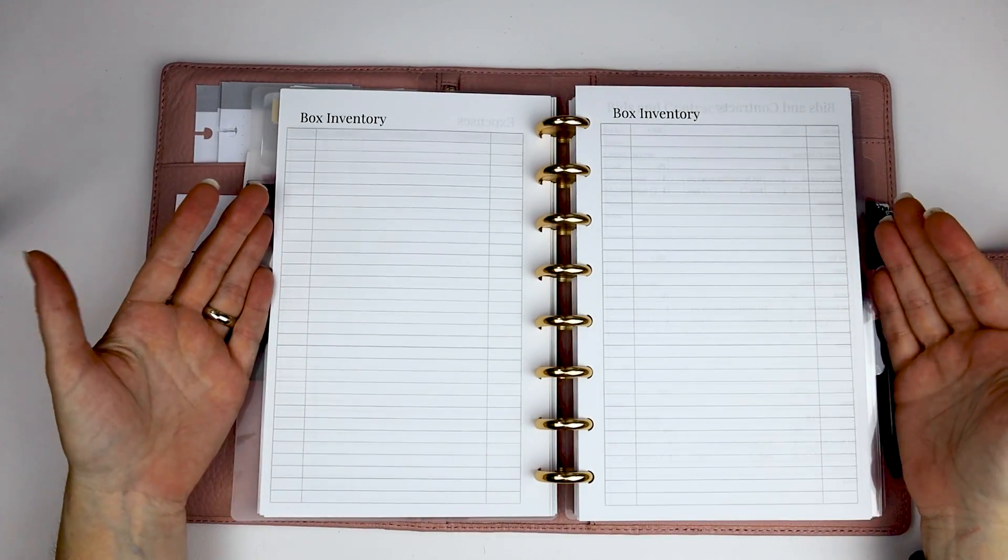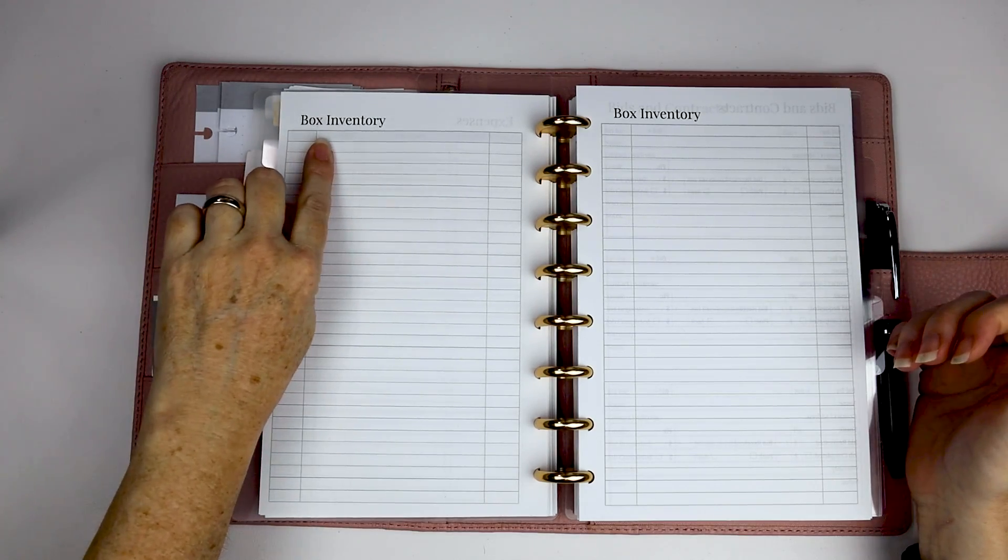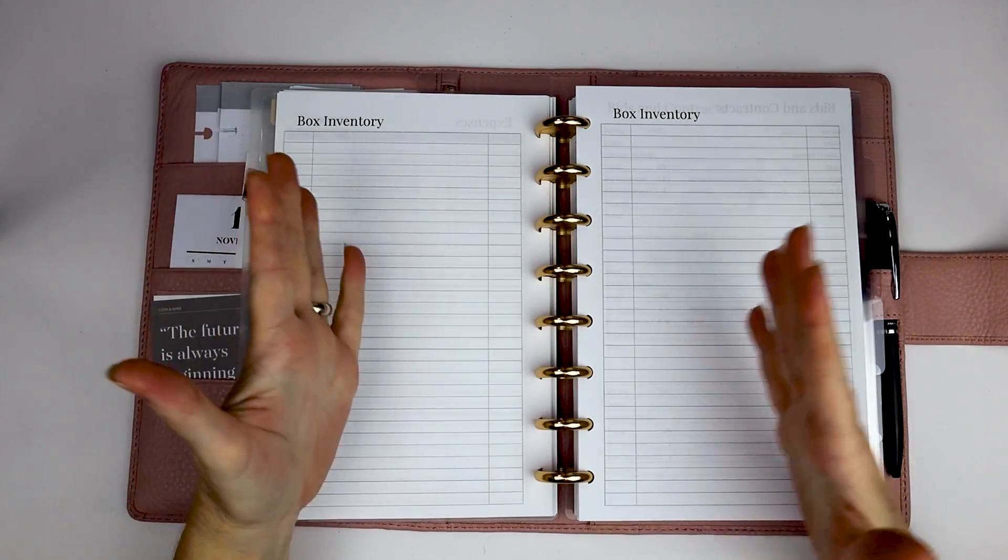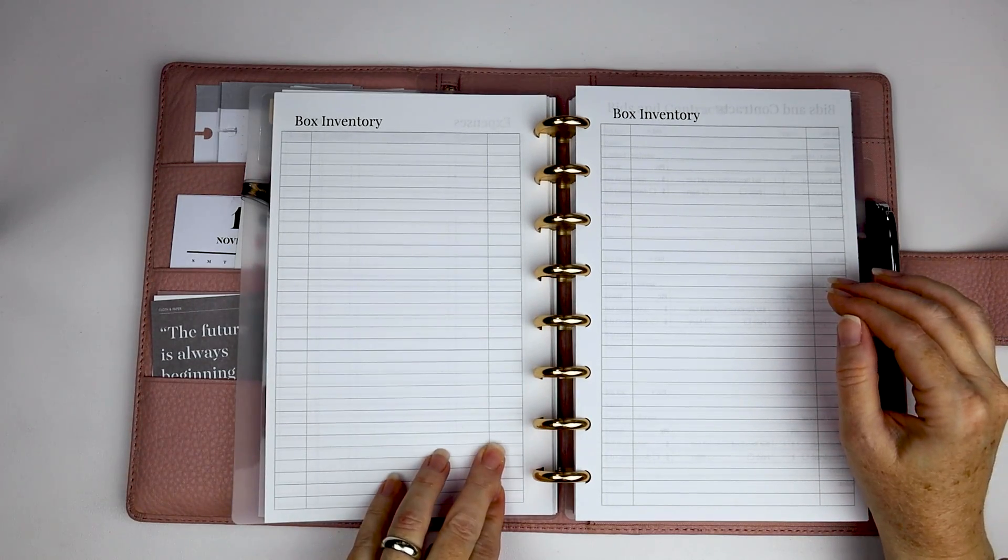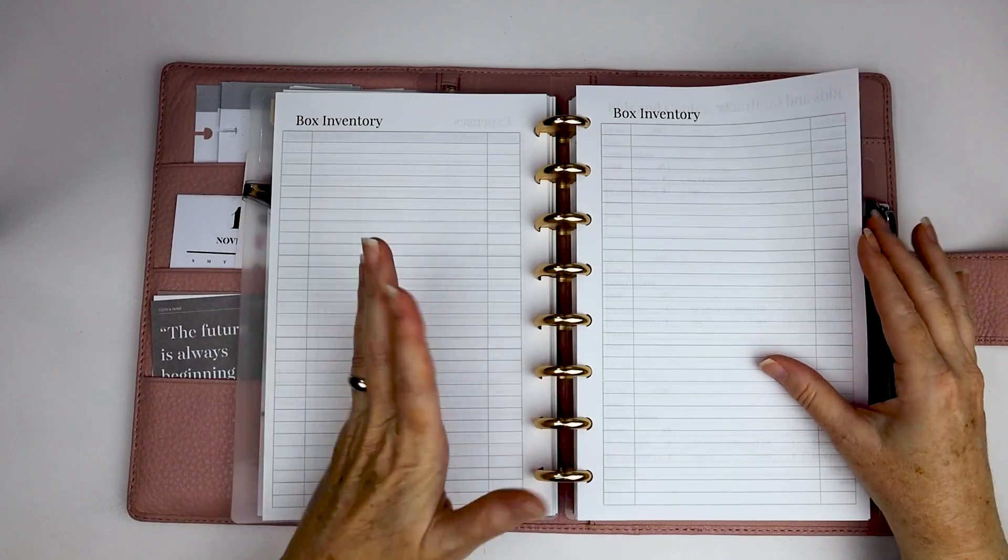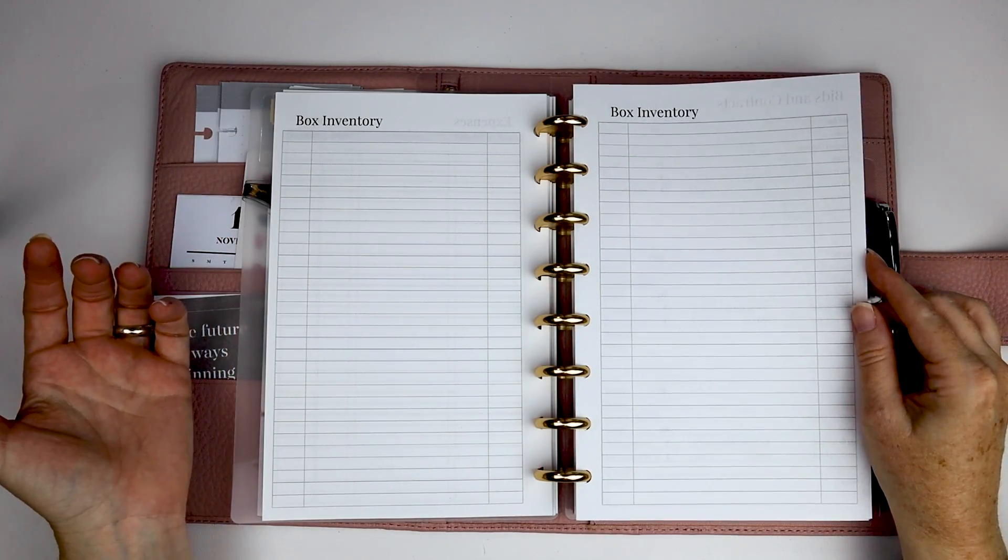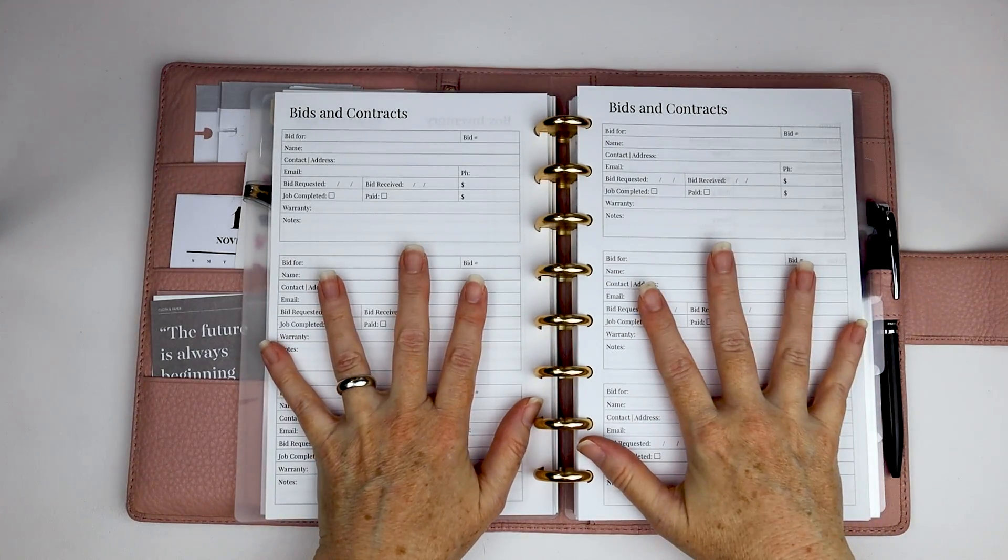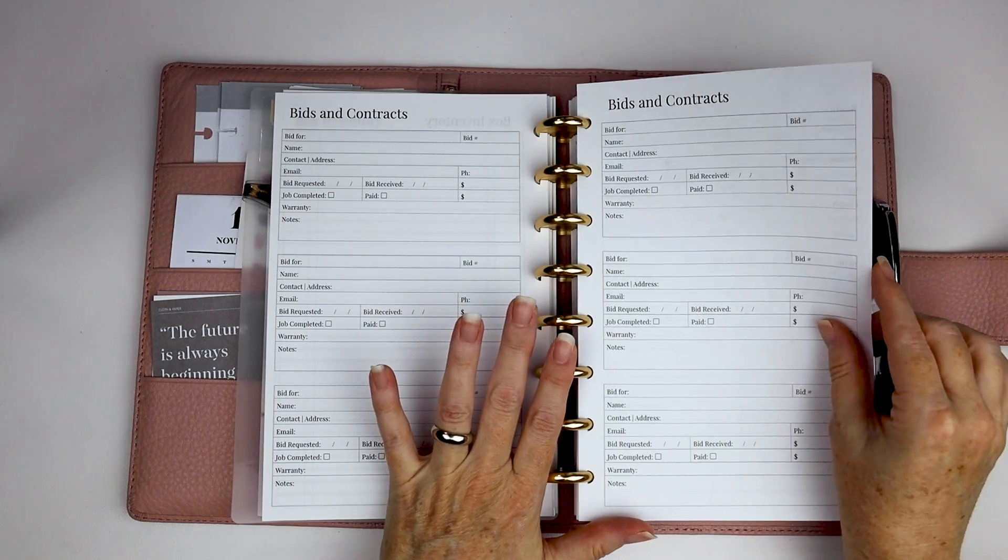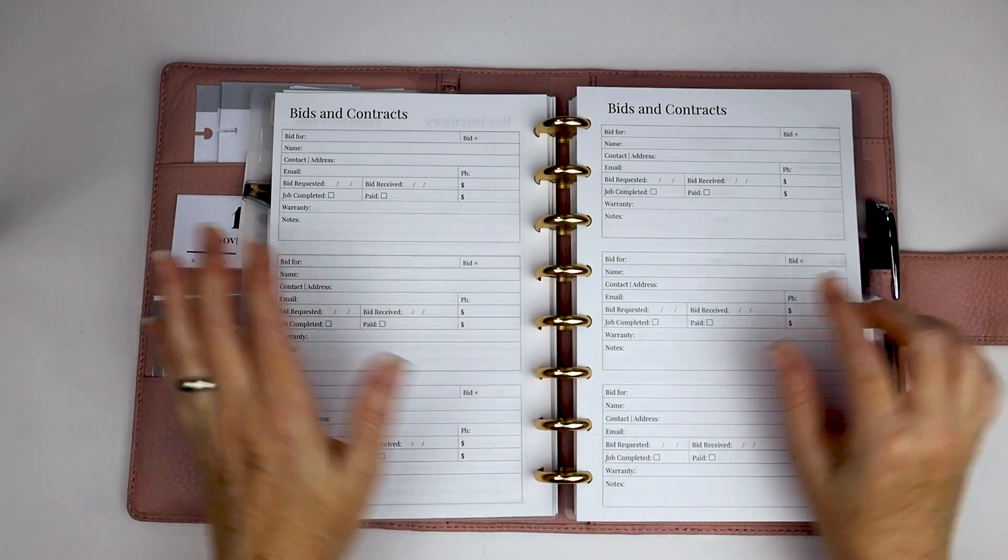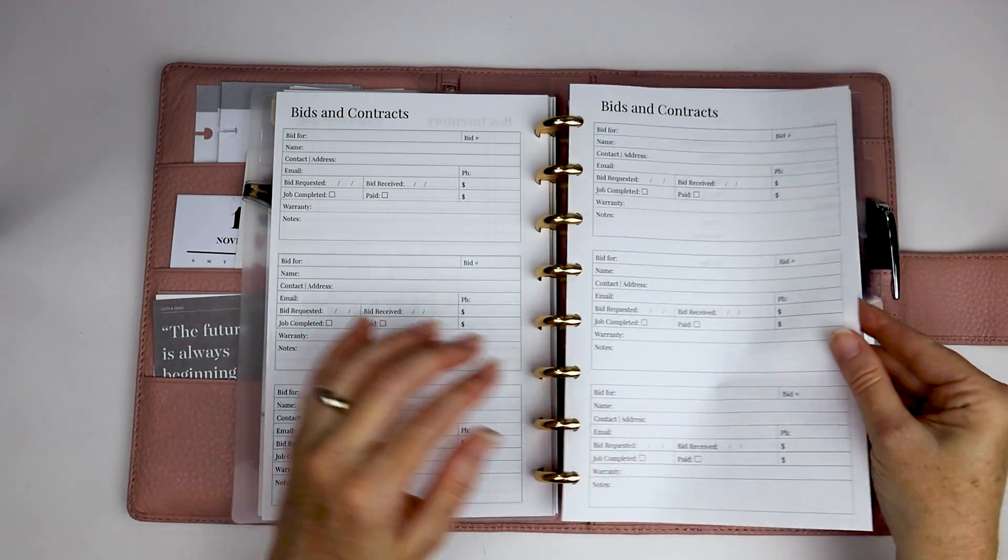And then I have a couple pages of box inventory. So if you're packing yourself, you have a place to make a note of like a box number. You can kind of use this in different ways. You can have a room, the contents, box number, vice versa. I kind of left it fairly open so you could use it however you want. I have another couple pages for bids and contracts. This is intended kind of for your new place where you're ending up. So the original six were meant for your previous location. These are meant for your new location.